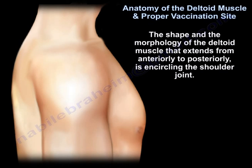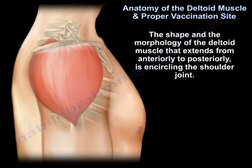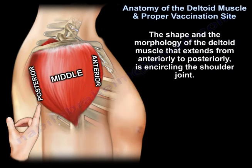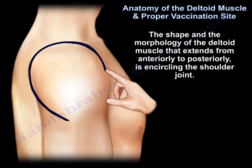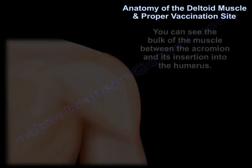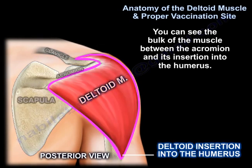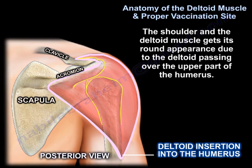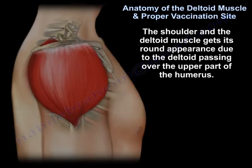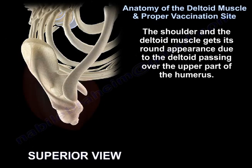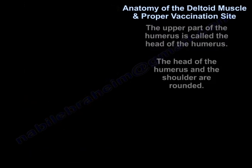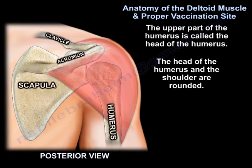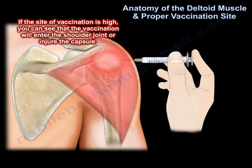The deltoid muscle extends from anteriorly to posteriorly, encircling the shoulder joint. You can see the bulk of the muscle between the acromion and its insertion into the humerus. The shoulder gets its round appearance due to the deltoid passing over the upper part of the humerus, called the head of the humerus. If the site of vaccination is too high, the needle will enter the shoulder joint or injure the capsule.